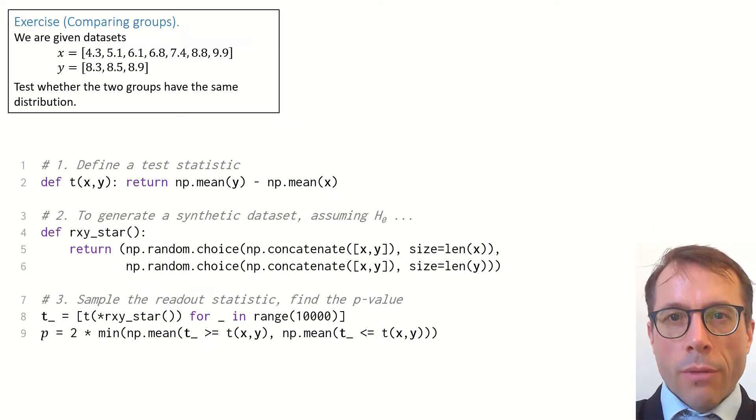For step 2, we have to generate a synthetic dataset under the assumption that H0 is true. So, let's think first of all, what is H0 for this question?